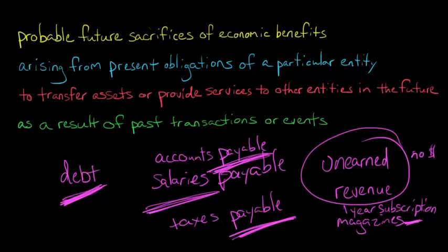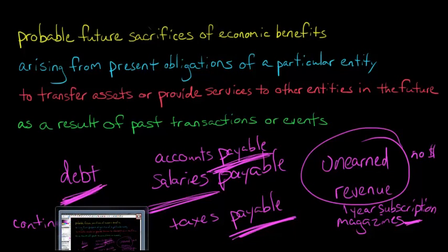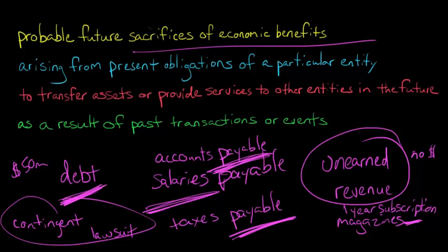And there are things that might not even be something where you technically owe yet, but you have some kind of probable idea that you're going to have to transfer assets — something like a contingent liability. If you talk to your attorneys and there's a 90% chance you're going to lose a lawsuit and have to pay $50 million, you ask: is this probable and can we estimate a sacrifice of future economic benefits? If so, then you have to recognize the liability, and we call it a contingent liability.